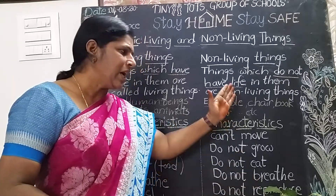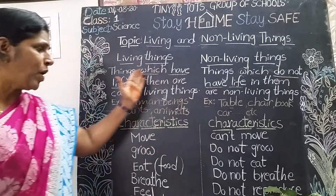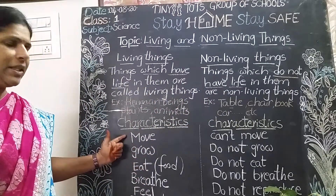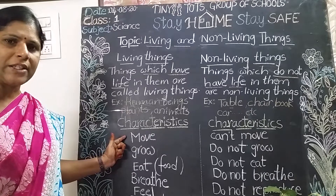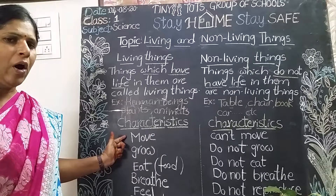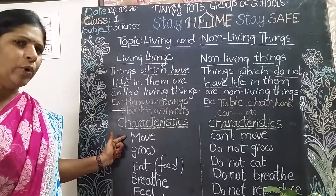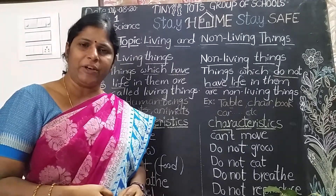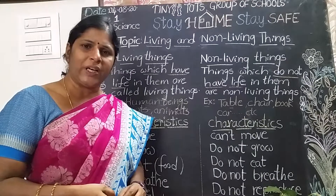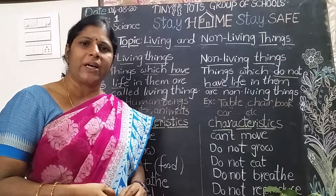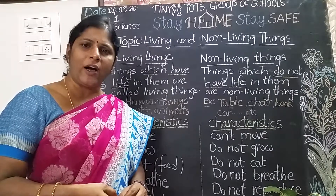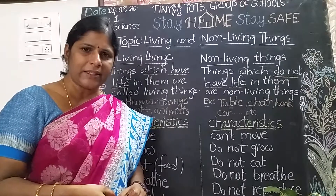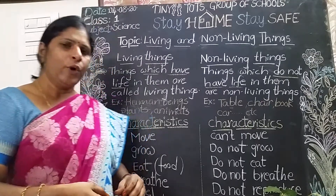Non-living things do not reproduce. Now, the first important characteristic feature of living things: all living things can move. Is your dad moving from one place to another? Is your brother moving from one place to another? Is your cat or dog moving from one place to another? Yes.